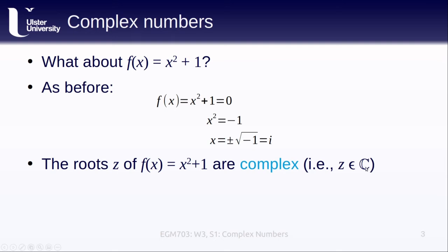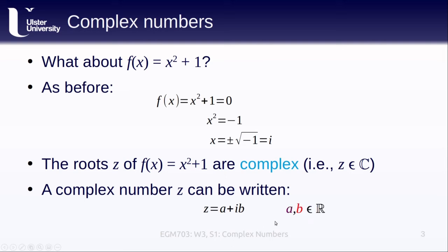We can also write a complex number z as follows: z is equal to a + ib, where a and b are real numbers, in other words the regular old floating point numbers that we're so familiar with. We say that a corresponds to the real part of z, and b is the imaginary part.